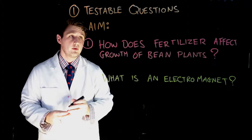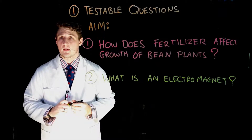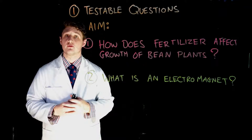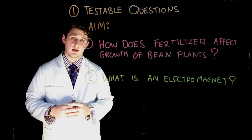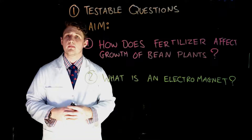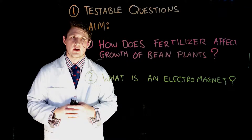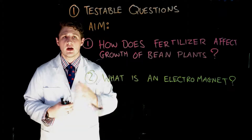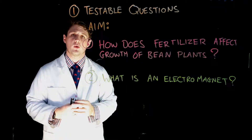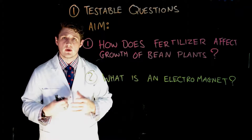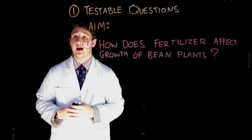Question one: how does fertilizer affect growth of bean plants? Question two: what is an electromagnet? In our subject you are asked to do two key areas of science — experiments and research. Experiments ask you to do, check, or test something, whereas research asks you to find information already produced, analyze it, and form your own opinions. These two questions are clearly very different. The top question is the testable question; the second is more of a research question about how an electromagnet works.